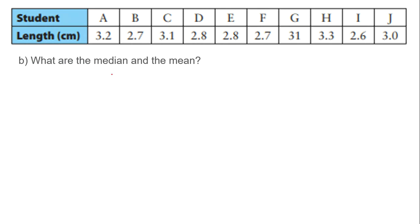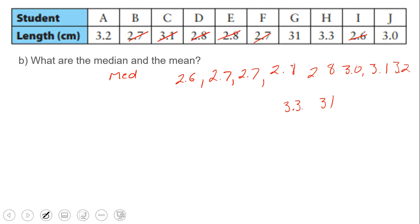What is the median and the mean? So, the median, if we've got 2.6, we've got 2.7, 2.7, so we're going to cross them out as we go so we can line them up. 2.8, there's another 2.8, 3.0, 3.1, 3.2, 3.3, and 31. Let's just make sure we've got that all. Yeah, so there's 10 numbers. We're going to cross out 4 from this side, cross out 4 from this side, and we've got the average of those two. So, 2.9 is the median.